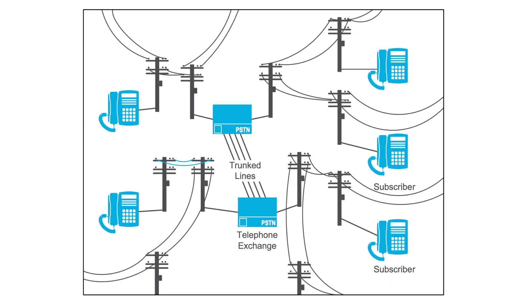Trunk networks get their name from the world of telephony. Traditionally, two cities would bundle together their connections into a single thick line like the trunk of a tree, referred to as a trunk line. And then the local household loop lines would be like the branches of a tree — one line for each household.